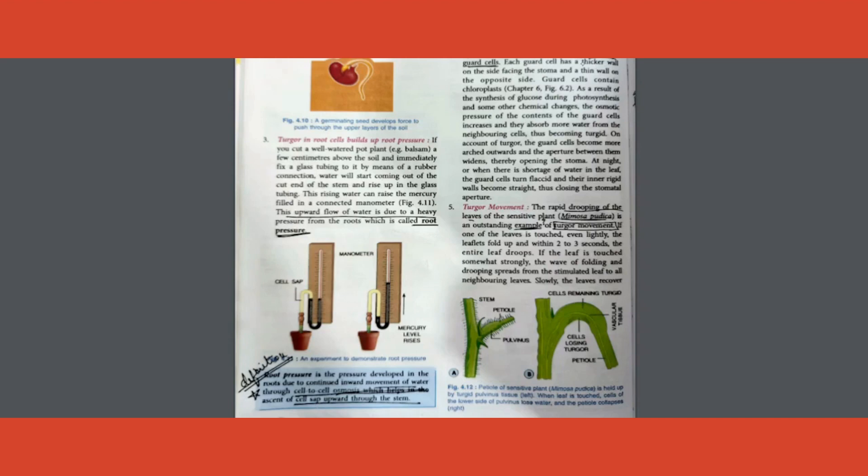One more possible question is: what causes opening and closing of stomata? Answer is turgidity of guard cell. Please mark that. Drooping of touch-me-not plant - what kind of example is it? It's an example of turgor movement. Please note all these down. So what happens in this touch-me-not plant or mimosa pudica? There is an area called pulvinus. This detects your touch as a stimulus. The touch that you did is a stimulus for the plant.